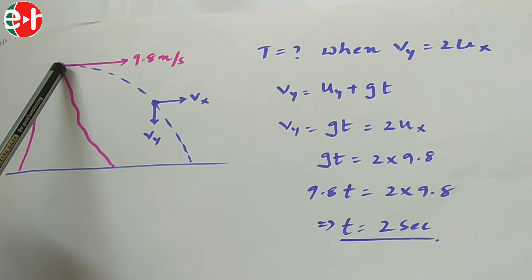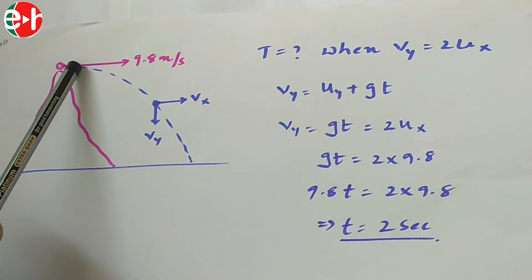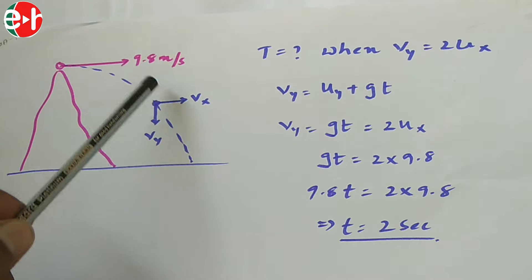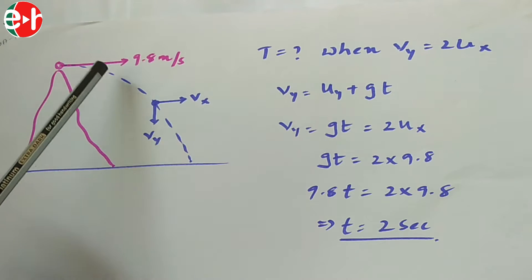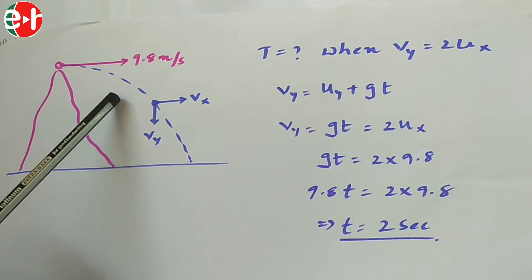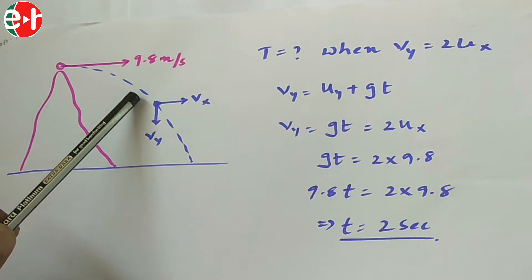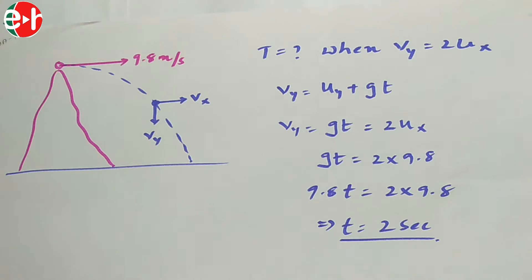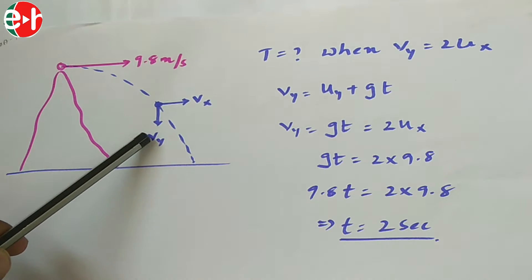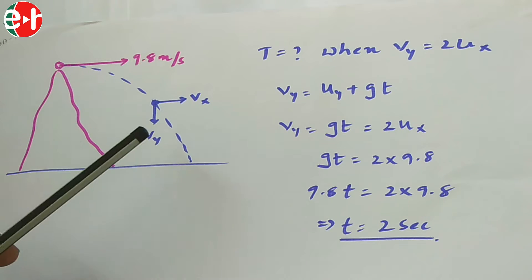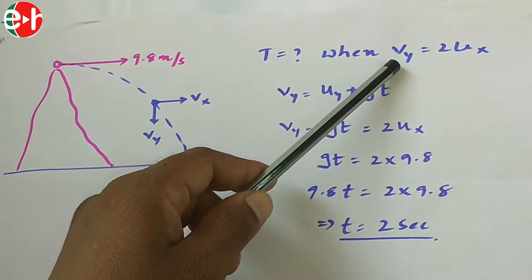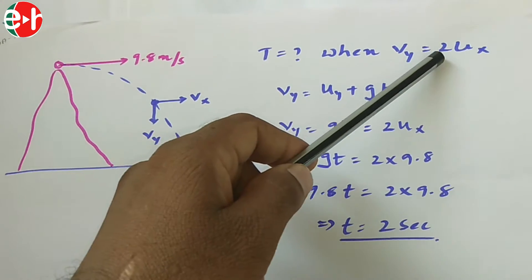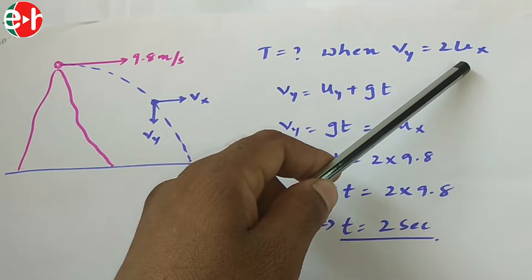In the case of a horizontal projectile, the horizontal component of velocity remains constant at 9.8 m/s. However, the vertical component of velocity gradually increases under the influence of gravity. We need to find the time when Vy equals twice the horizontal component of velocity.